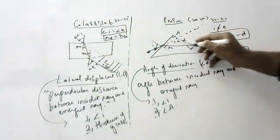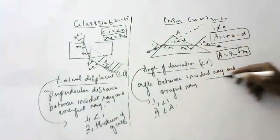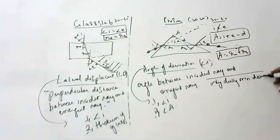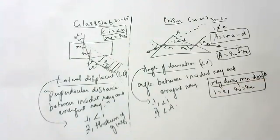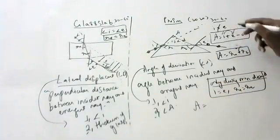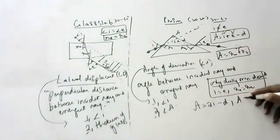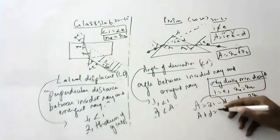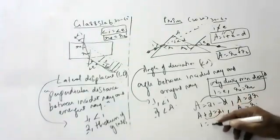When will i equal e? Only during minimum deviation. When light travels at minimum deviation, i equals e, and R1 equals R2. At minimum deviation: D becomes Dmin, so A plus D equals 2i, giving i equals (A + D)/2. Also A equals 2R, giving R equals A/2. So the refractive index formula uses i equals (A + D)/2 and R equals A/2.